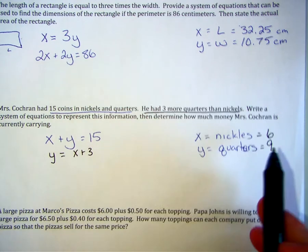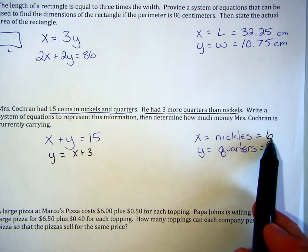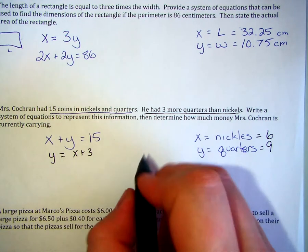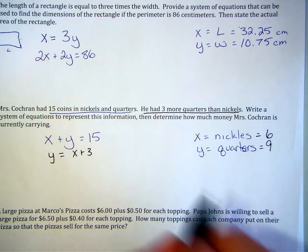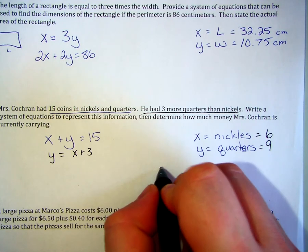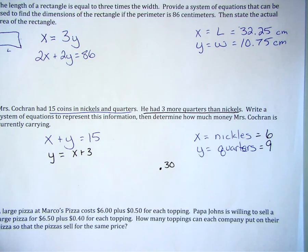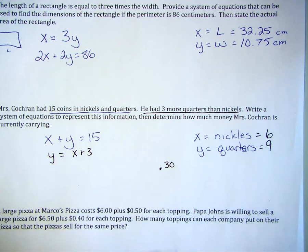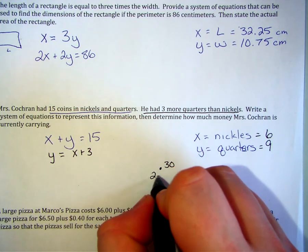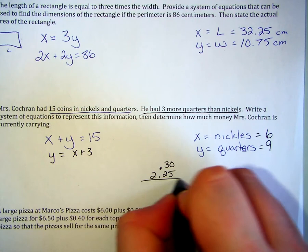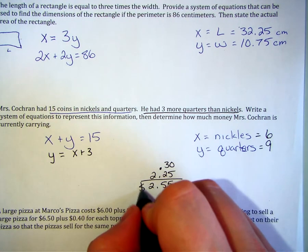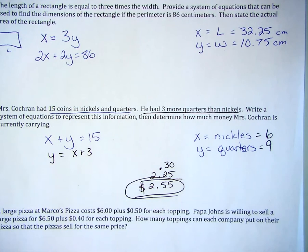So, we're certainly going to want to multiply our six times the known value of a nickel, which is 5 cents. And, if I have six nickels at 5 cents apiece, then I have 30 cents. Well, if I have nine quarters at 25 cents apiece, then I have 2 dollars and 25 cents. And so, altogether, Ms. Cochran is carrying around 2 dollars and 55 cents.